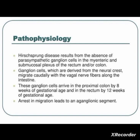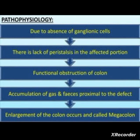Due to the absence of ganglionic cells, there is a lack of peristalsis in the affected portion, leading to functional obstruction of the colon. This causes accumulation of gas and feces proximal to the defect, resulting in enlargement of the colon — that is why it is called megacolon. This is the pathophysiology: absent ganglionic nerve cells → no peristalsis → accumulation of fecal and gaseous matter → megacolon.